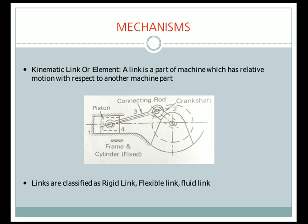The next type of link is the fluid link. In a fluid link, motion is transmitted through fluid power. Examples are hydraulic pumps, hydraulic valves, and pneumatic systems. In hydraulics, motion is transmitted using liquid power, while in pneumatics, power is transmitted by the energy of air.